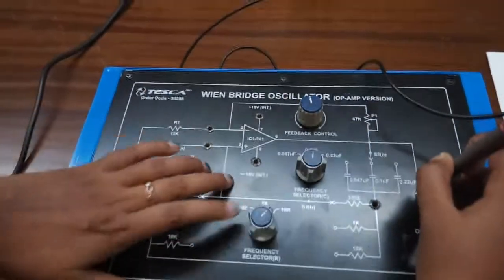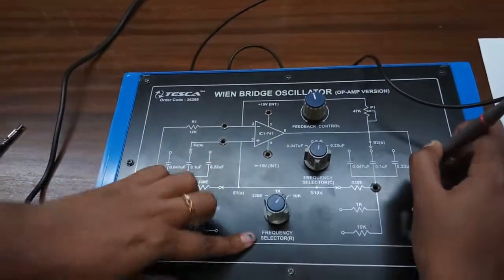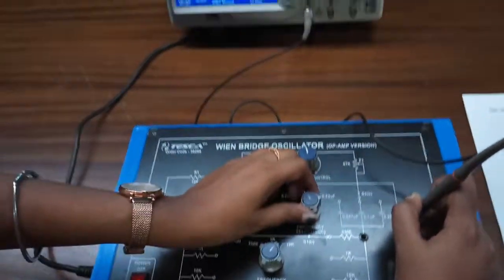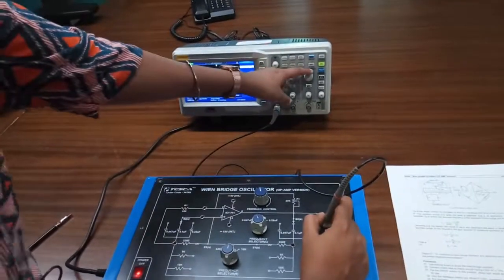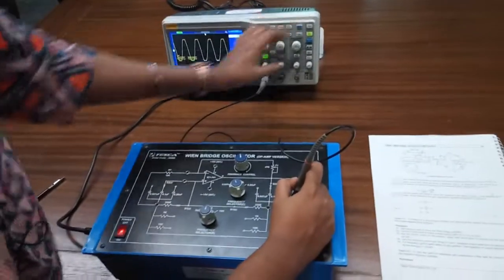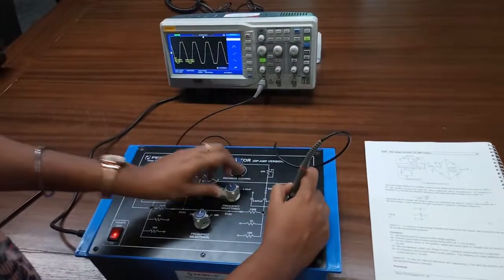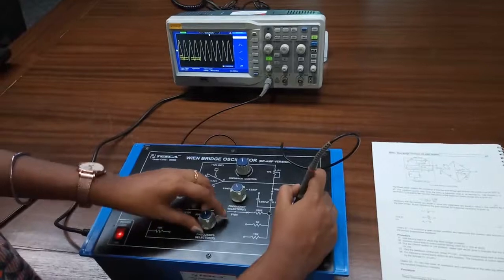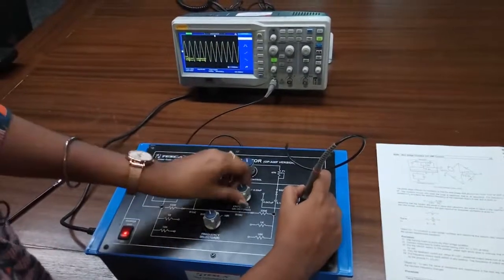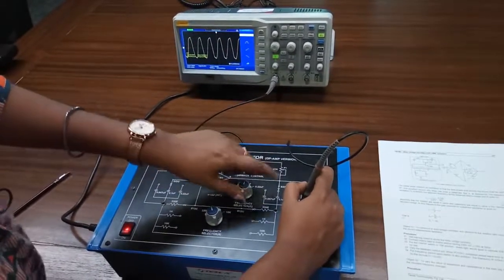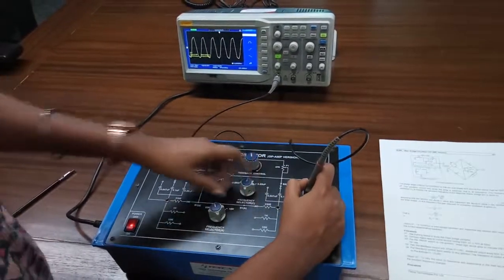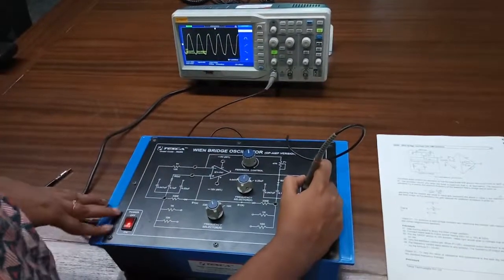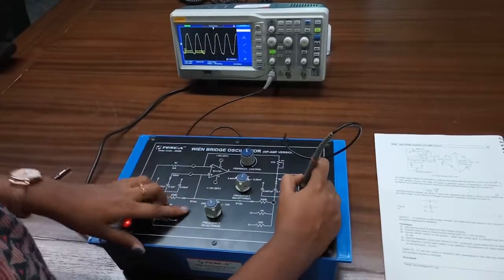Now vary these two frequency selectors, capacitor-based and resistor-based, and we can see that the frequency is changing. We can get the frequency theoretically from this formula: f equals 1/(2πRC), where R is the resistor and C is the capacitor.